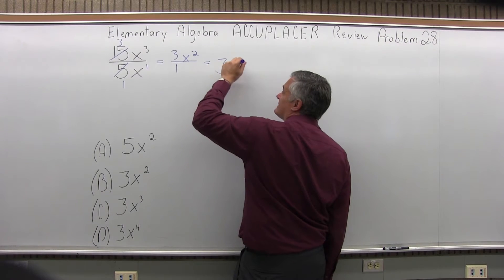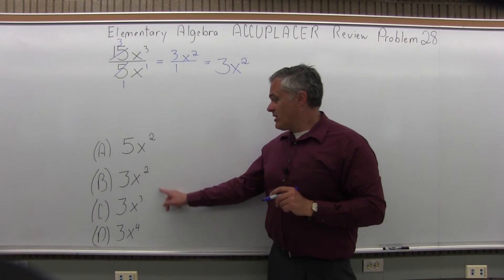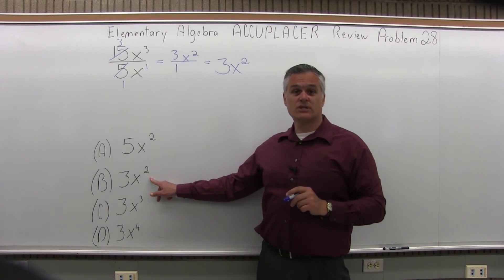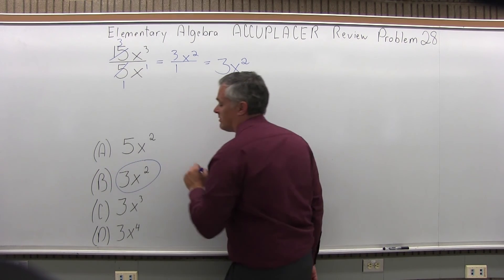So we have 3x to the second power or what you would call 3x squared. And if we look, that is one of the options. 3x squared is option B. So option B is the answer for this problem.